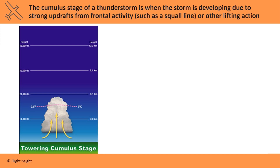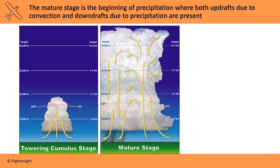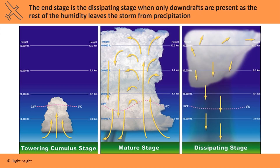When these droplets become heavy enough that the updrafts no longer hold them up, they fall as precipitation. This is the beginning of the mature stage of the thunderstorm, characterized as having both updrafts and downdrafts and seeing the beginning of precipitation. The final stage is the dissipating stage, where the remaining moisture falls out of the cloud and only downdrafts are present.